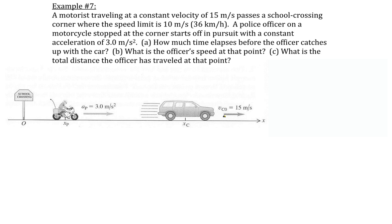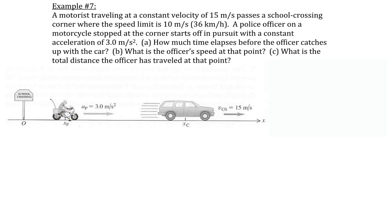At some point later on, the police officer will catch up to the car and they will both have the same position. This is key in linking the motion of both when we solve the problem. Before we start, I'd like to organize all of the known and unknown information. Because there are two different types of motion — the accelerated motion of the police officer and the constant velocity motion of the car — a good idea would be to organize them separately into two tables.